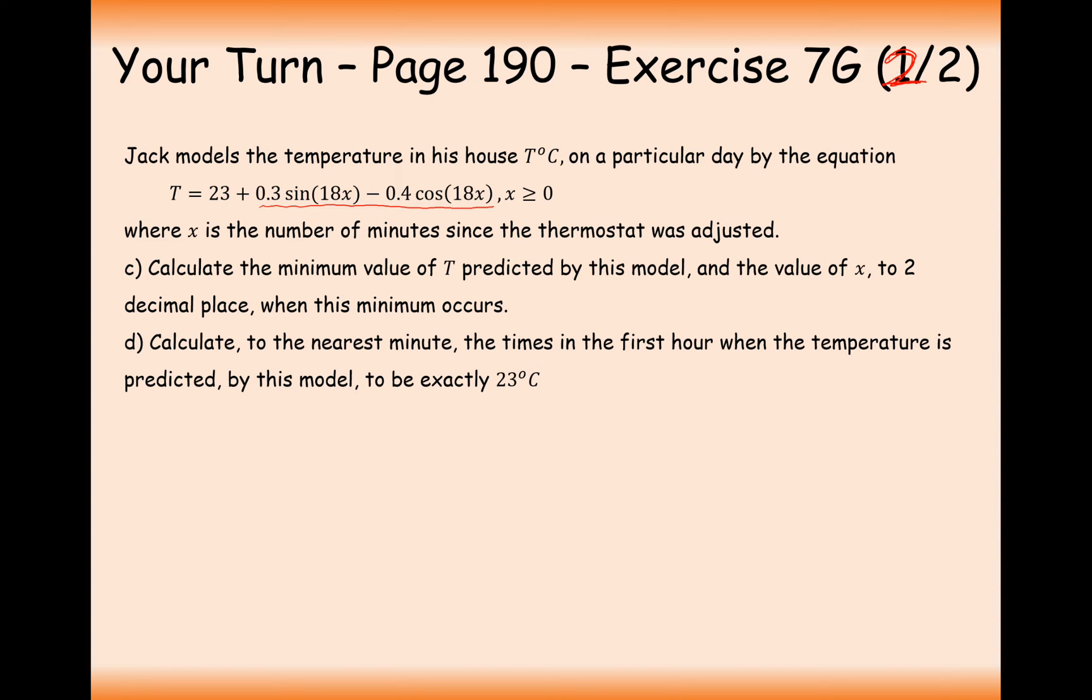Okay, so first thing I would probably want to do here is sort out this t. It's going to be t equals 23 plus 0.5 sine, and then it's going to be theta minus 53.1, which we already worked out from part A. But it's not going to be theta, it's going to be 18x. So 23 plus 0.5 sine 18x minus 53.1.